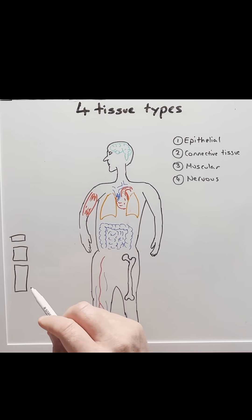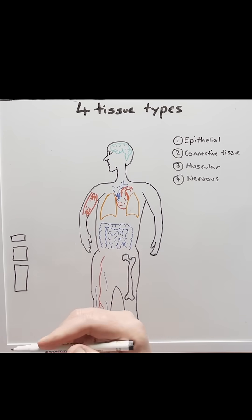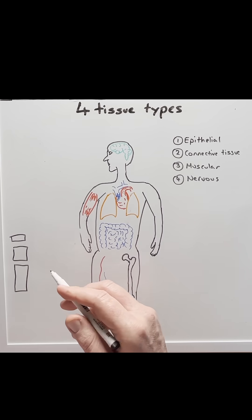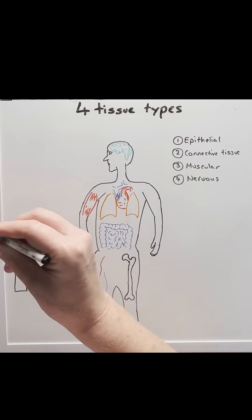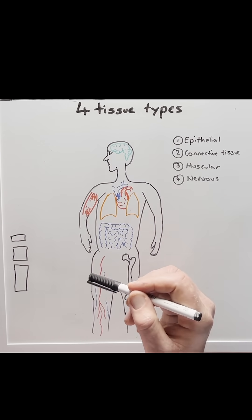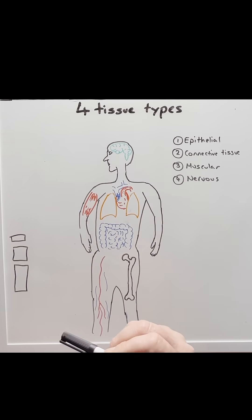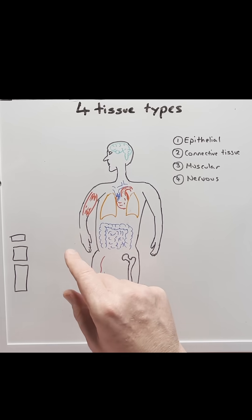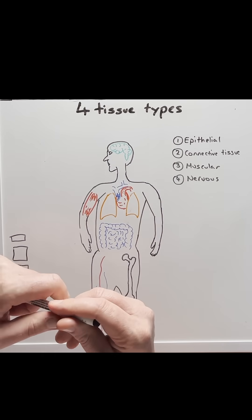If these cells are a simple epithelium, their functions would be diffusion, secretion, and absorption. For instance, in the lungs, the alveoli cells, which are simple squamous tissues, are there to absorb oxygen into the blood.